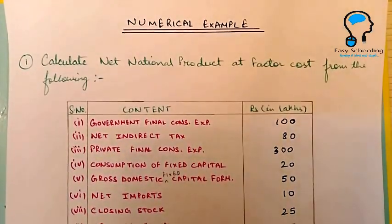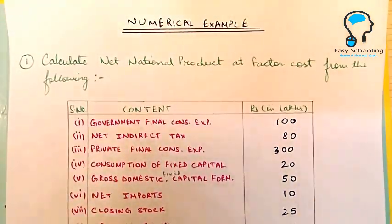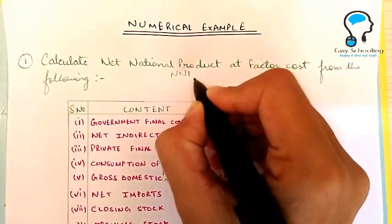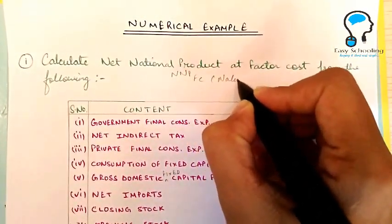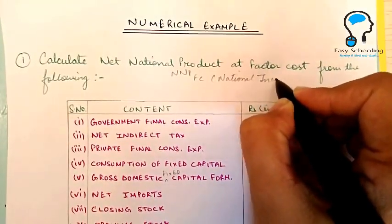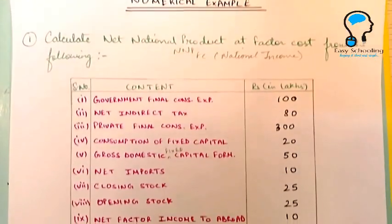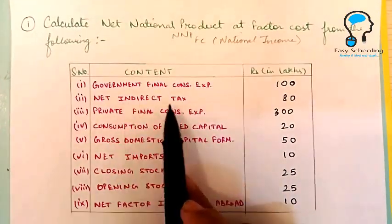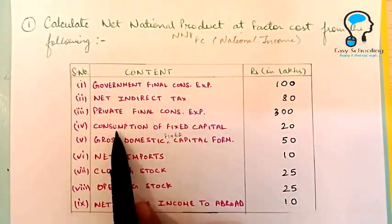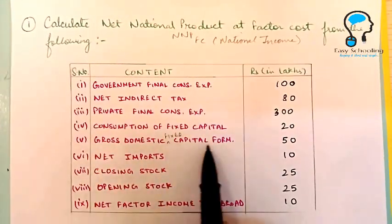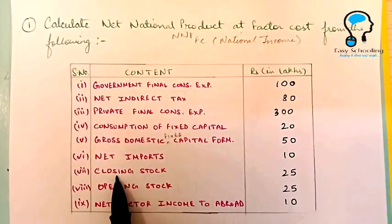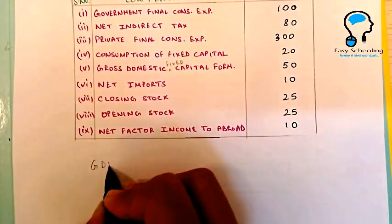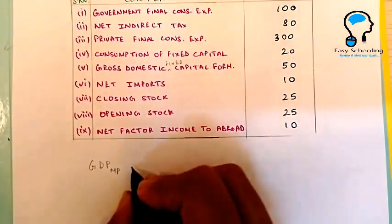Now we will solve a numerical example for the expenditure method. Calculate Net National Product at factor cost — that is, national income — from the following data using the expenditure method. We are given: government final consumption expenditure, net indirect taxes, private final consumption expenditure, consumption of fixed capital, gross domestic fixed capital formation, net imports, closing stock, opening stock, and net factor income to abroad.